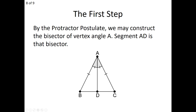We are going to take our isosceles triangle ABC, with legs AB and AC being equal, and apply the Protractor Postulate to bisect the vertex angle. We construct this angle bisector — it's a ray from point A that cuts angle BAC right in half and intersects the opposite side of the triangle. We truncate it at that intersection, labeling the point D, leaving us with segment AD representing that angle bisector.